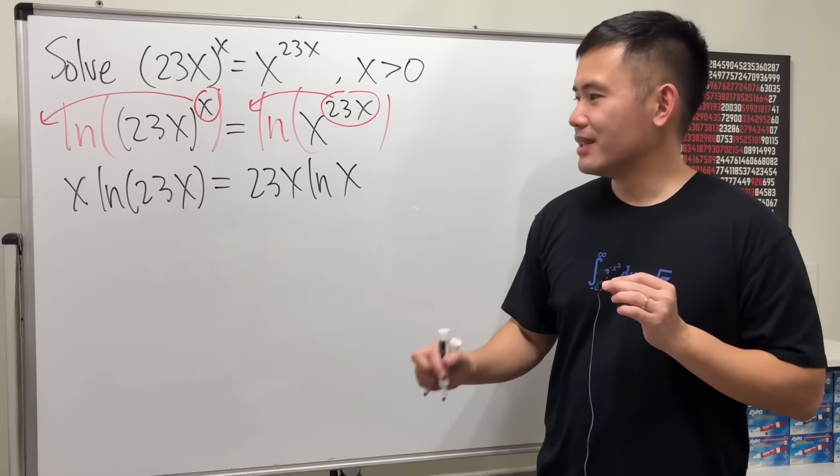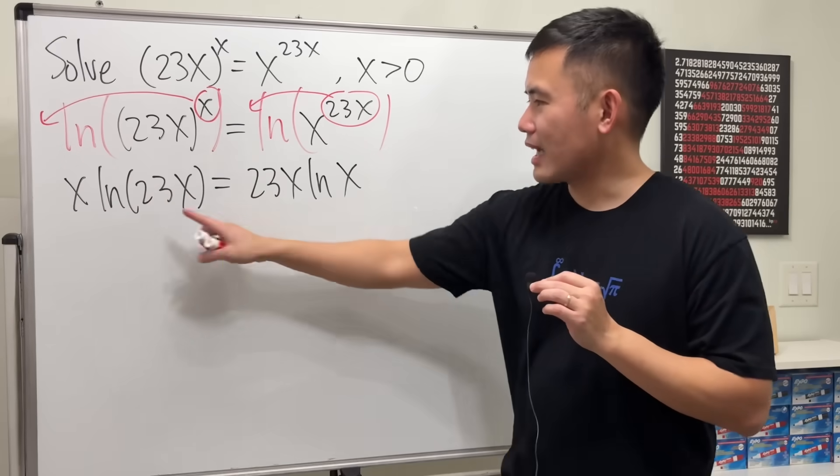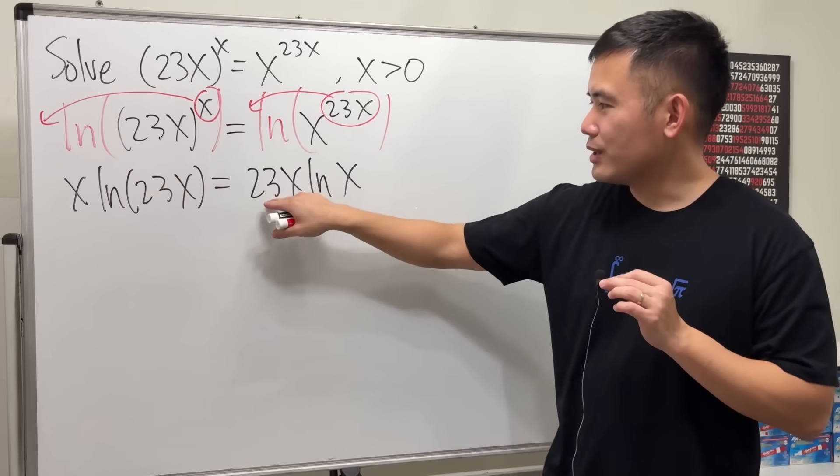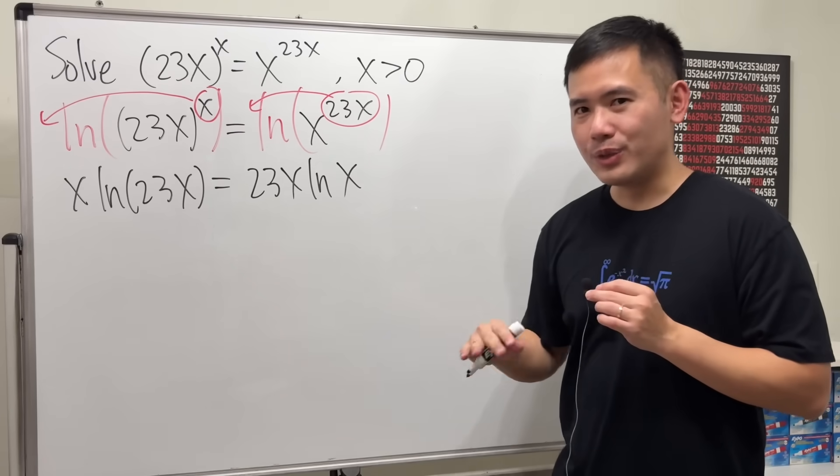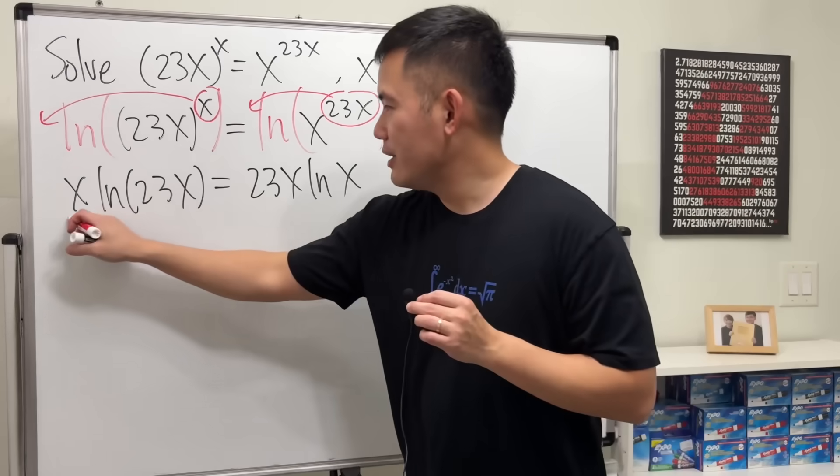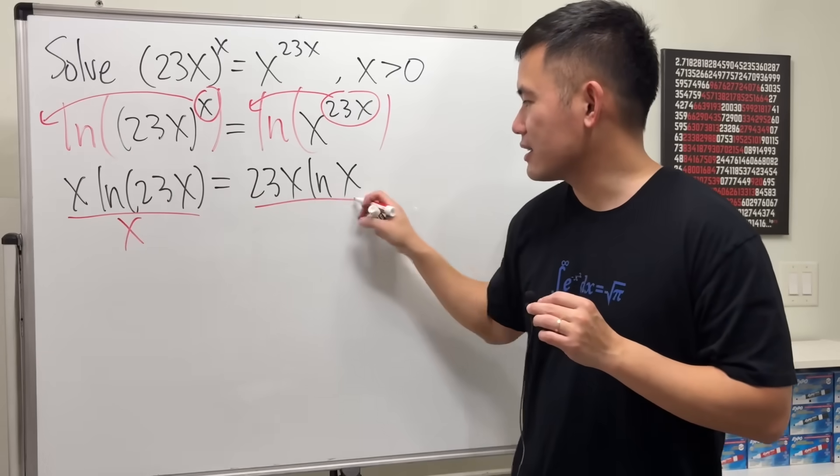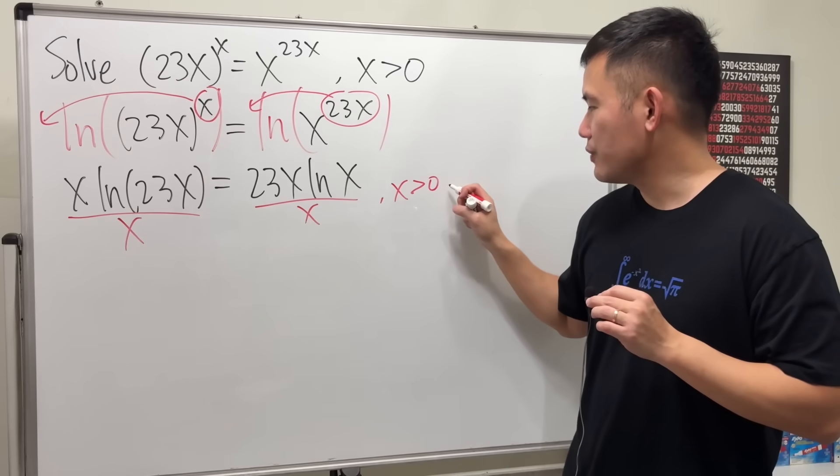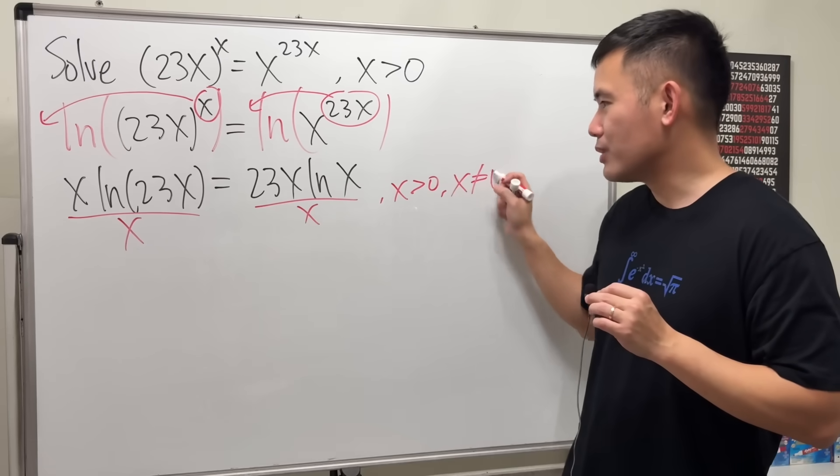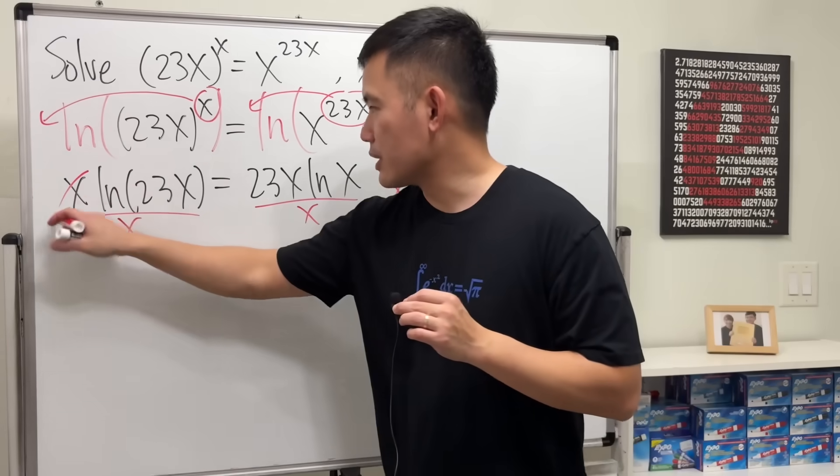Okay, then what do we do? Notice now we have x times this and then 23 times x times ln(x). x is greater than zero, so we know x ≠ 0. Therefore, I'm just going to divide by x on both sides. Note because x > 0, therefore x ≠ 0, so this is okay. Get rid of them.